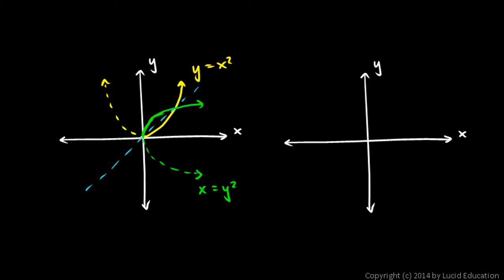That way, the function and its inverse are both functions. You can see that if we took the entire parabola and reflected it, we end up with a curve that fails the vertical line test. So if we only look at half the parabola, then when we reflect it across the line y equals x, we still get something that can be mathematically considered a function — it will still pass the vertical line test, and there's only one y value for a given x value. We restrict our domain — just look at x values greater than or equal to zero — such that the inverse is also a function.